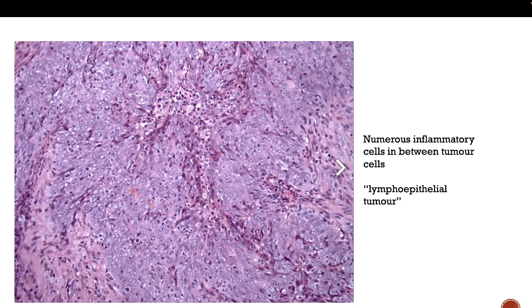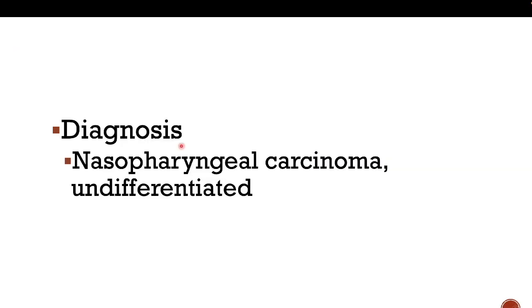Under higher magnification you can see the lymphoepithelial lesion — clumping together of the cells without much visible cytoplasm, and in between an area rich in lymphocytes. That is why it is also called a lymphoepithelial tumor. This is nasopharyngeal carcinoma, undifferentiated type — clinically called NPC. It is quite an aggressive malignancy and can be fatal, but it is radiosensitive if treated early.